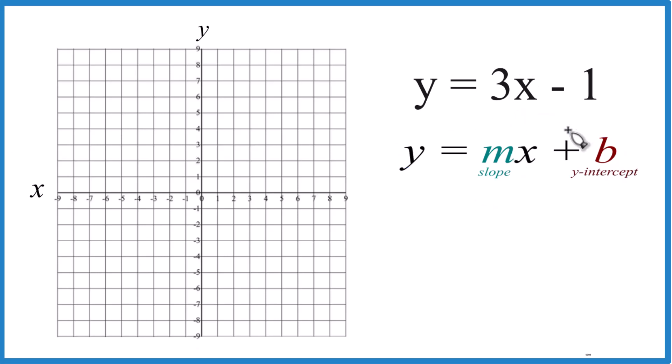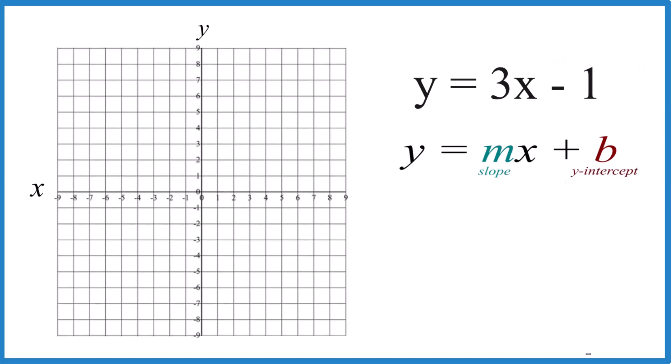So 3x minus 1, the y-intercept is minus 1. So we're going to go to the y-axis here and find minus 1. That's where we're going to cross the y-axis. That's the y-intercept.